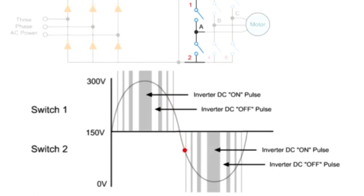The time duration and intervals of these DC voltage pulses determine the synthesized AC output voltage and frequency.